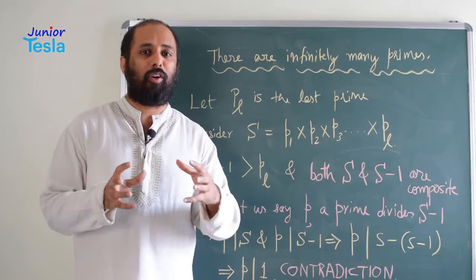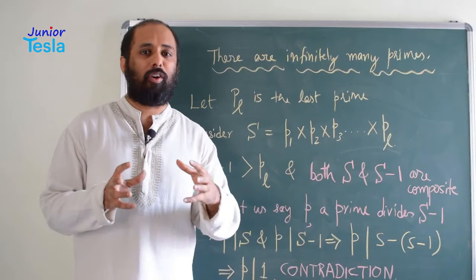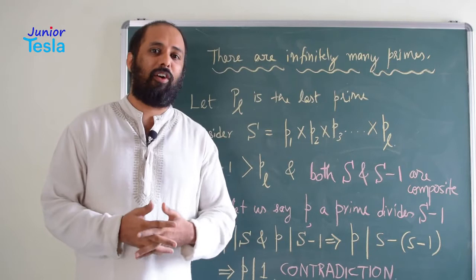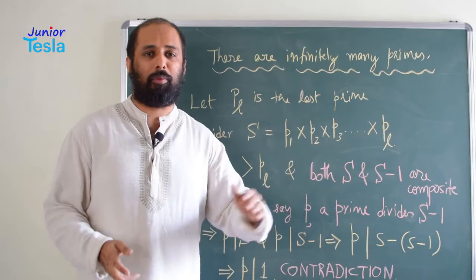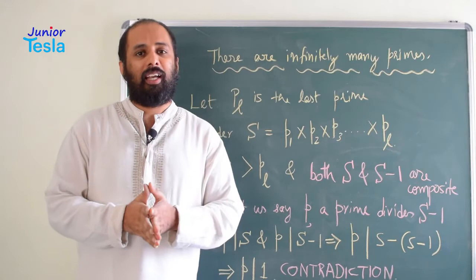Now, S and S minus 1, they both will be composite numbers. Because S minus 1 definitely it is greater than PL, right? Now, any number after PL is a composite number because PL itself is the last prime number. So S minus 1 is a composite number. And S obviously, because it is a product of all the prime numbers is a composite number. So both S and S minus 1 are composite numbers.